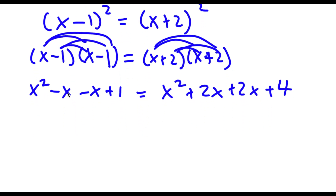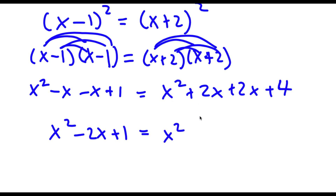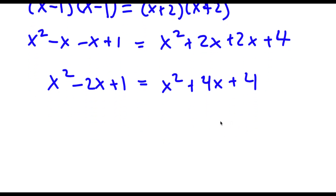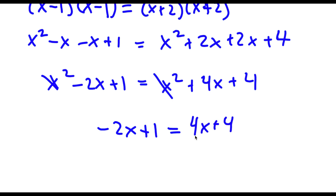Now x minus 1 times x minus 1: x times x is x squared, x times negative 1 is negative x, negative 1 times x is negative x, and negative 1 times negative 1 is positive 1. And x plus 2 times x plus 2: x times x is x squared, x times 2 is 2x, 2 times x is 2x, 2 times 2 is 4. So for x squared minus x minus x plus 1, that simplifies to x squared minus 2x plus 1, and x squared plus 2x plus 2x plus 4 gives x squared plus 4x plus 4. The x squared terms cancel out, leaving negative 2x plus 1 is equal to 4x plus 4.